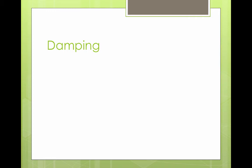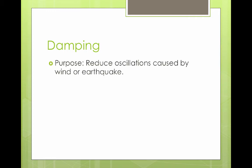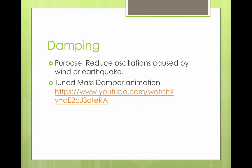Damping is performed to reduce the oscillations — the swaying back and forth — that would be caused in a tall structure by wind or earthquake. A tuned mass damper is a device mounted in structures that reduces the amplitude of mechanical vibrations, meaning how far the building sways back and forth.